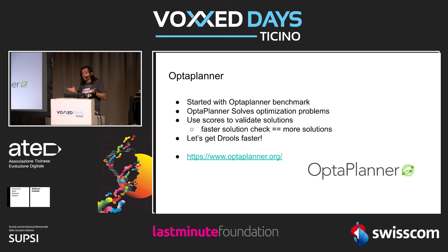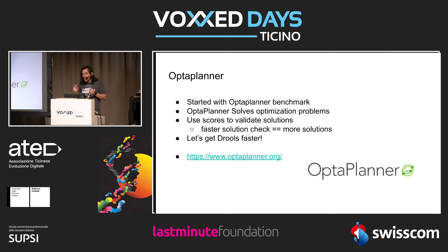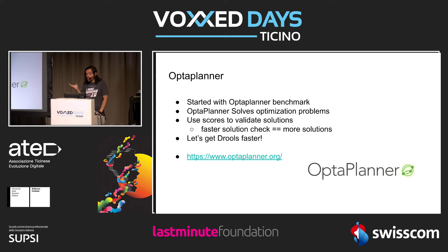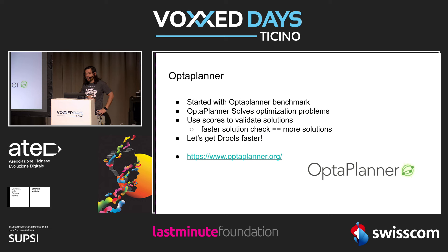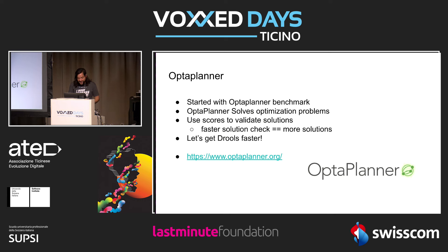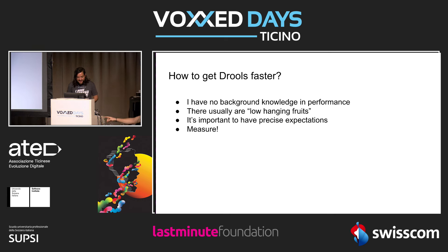We knew Drools was fast, or assumed it was fast enough. But it wasn't. The OptaPlanner team created a different score evaluation engine that was faster than Drools. I was annoyed by that, so I devoted time to making Drools faster — and I managed to get it a bit faster.